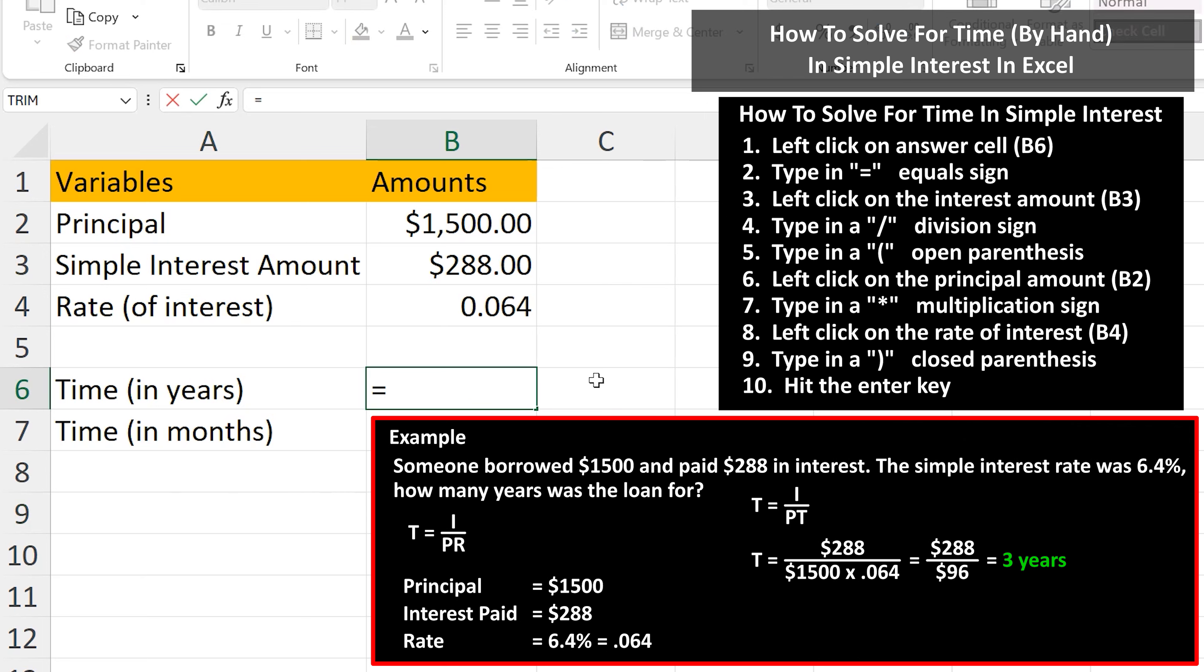Next, we type in an equal sign. And from here, following the formula, we left click on the interest amount, cell B3.